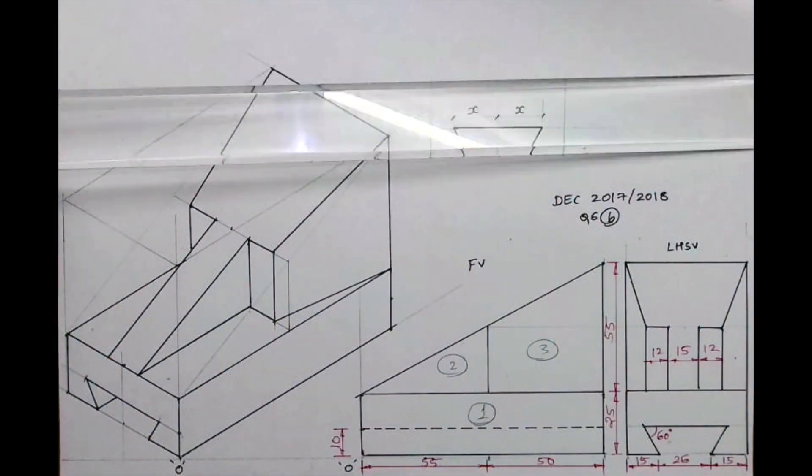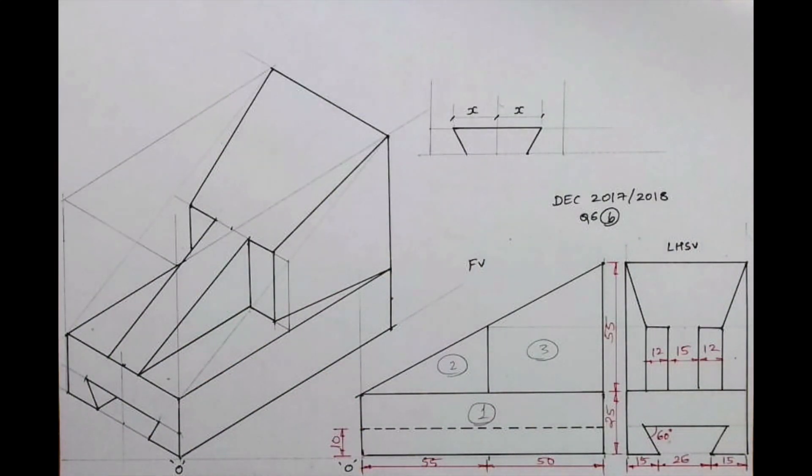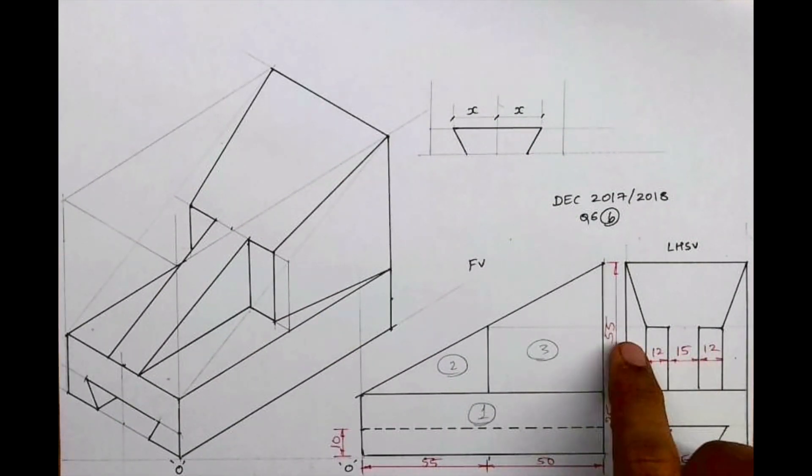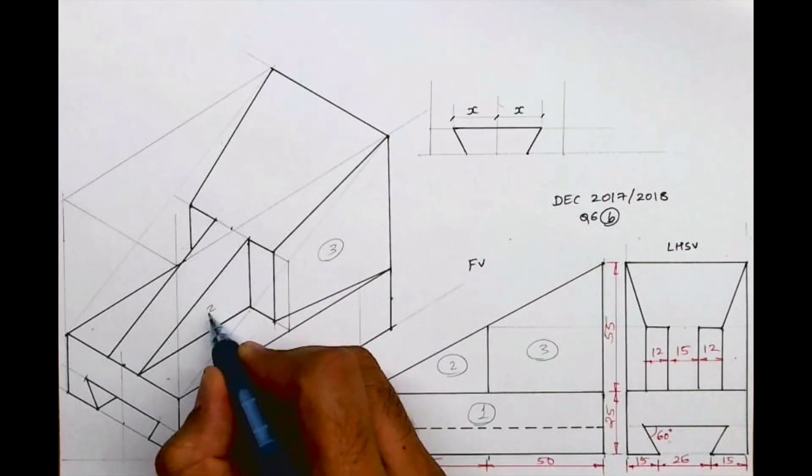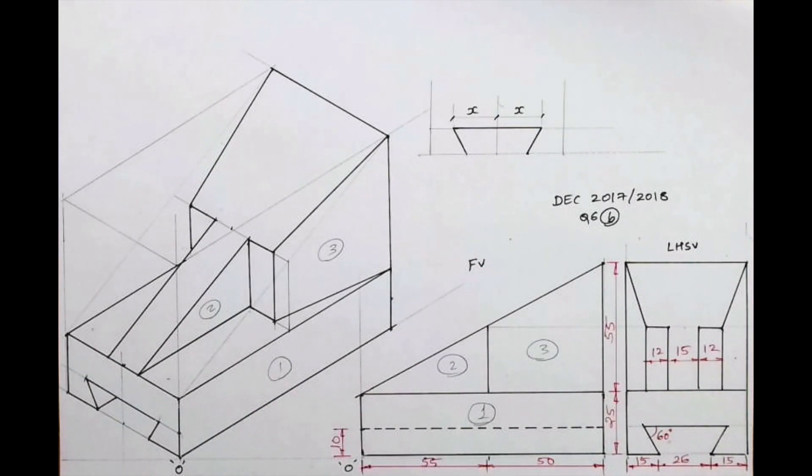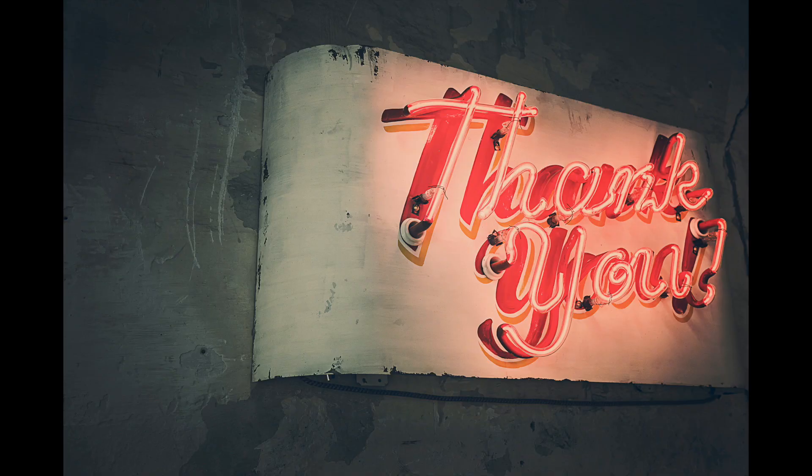So I hope you people have understood this. If you see carefully, we have done part 1, 2, and 3. See this, this is the side view, 12 parts, this slope part, and this 1, 2, and 3. This is 3, this is 2, and this is 1. So I hope you people have understood this. Thank you.